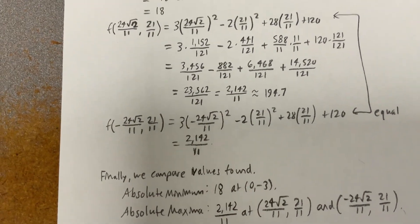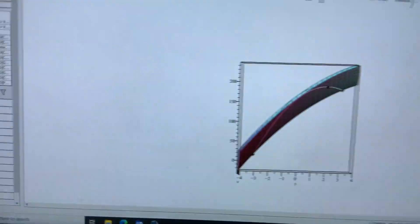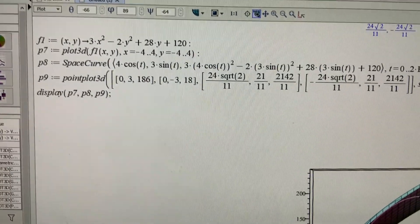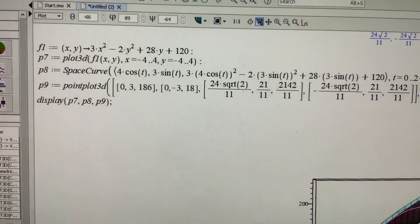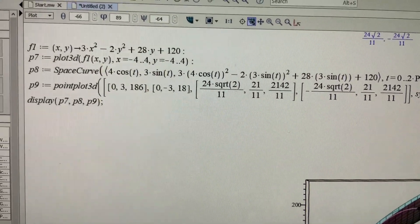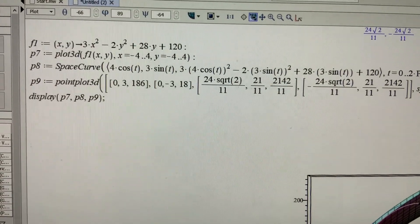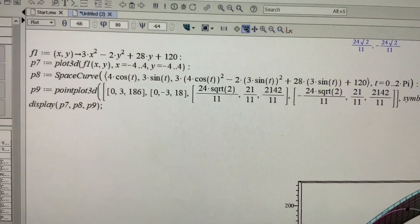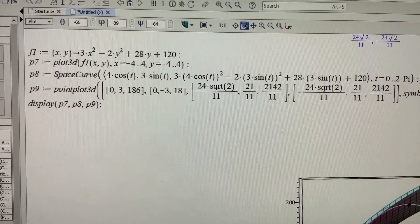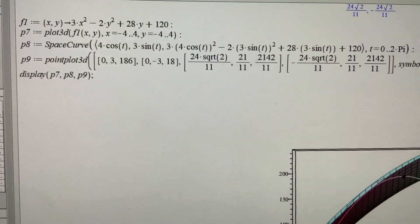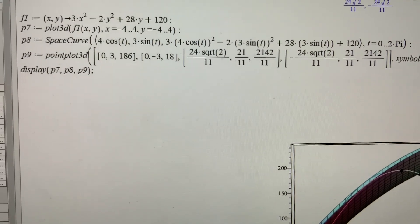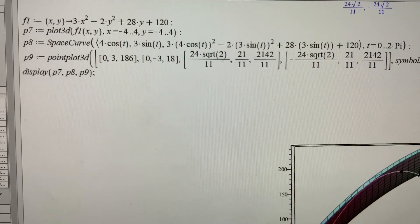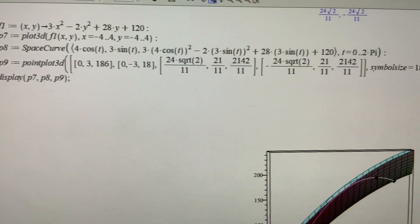And what I'd like to show you is using the computer algebra system, Maple, I've got the setup here with f1, set up as a function of two variables. Then I've got the p7 as the plot 3d of f1(x,y) from x equals negative 4 to 4 and y equals negative 4 to 4. The p of 8, I'm defining the space curve, letting x be 4cos(t) and letting y be 3sin(t). And that's just the substitution into my f(x,y).